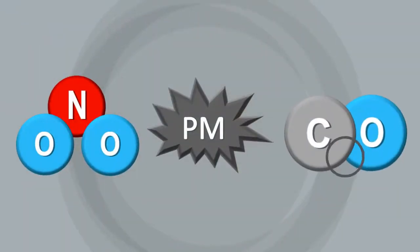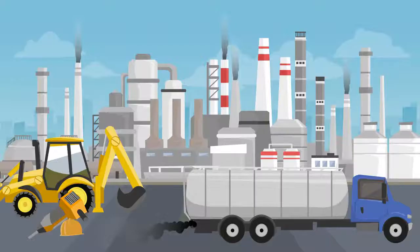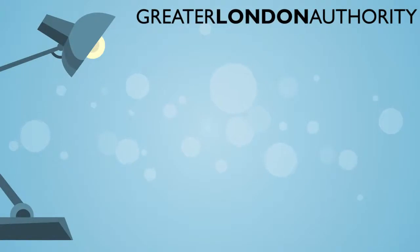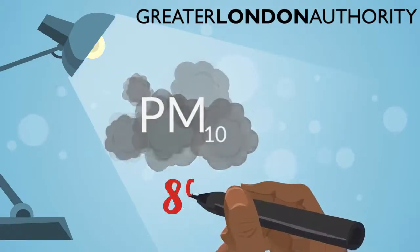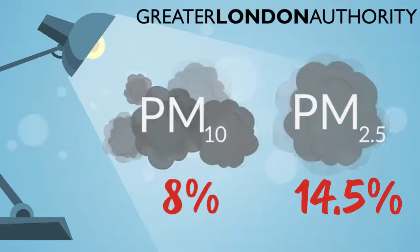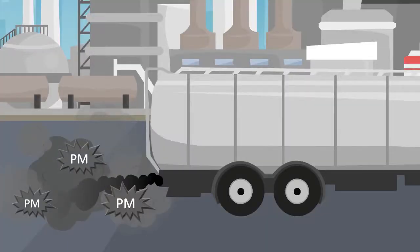You've probably spotted a theme running through the pollutants we've talked about. One of the biggest culprits of poor air quality is plant and machines running on diesel fuel, and construction is a significant source of some of the major air pollutants. For example, the Greater London Authority has calculated that construction sites are responsible for 8% of PM10 and 14.5% of PM2.5 directly emitted into the air in London. Particulate matter includes the tiny particles of soot, particularly from diesel engines, which have been linked with cancer and heart attacks.